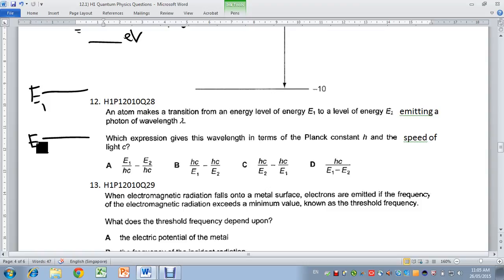Which expression gives this wavelength in terms of the Planck constant and the speed of light c? The energy of the wave E will be equal to hc over lambda. The energy here is E1 minus E2 equals hc over lambda. They are looking for the expression of lambda, which will be equal to hc over E1 minus E2. I believe the answer is D. The answer is D.